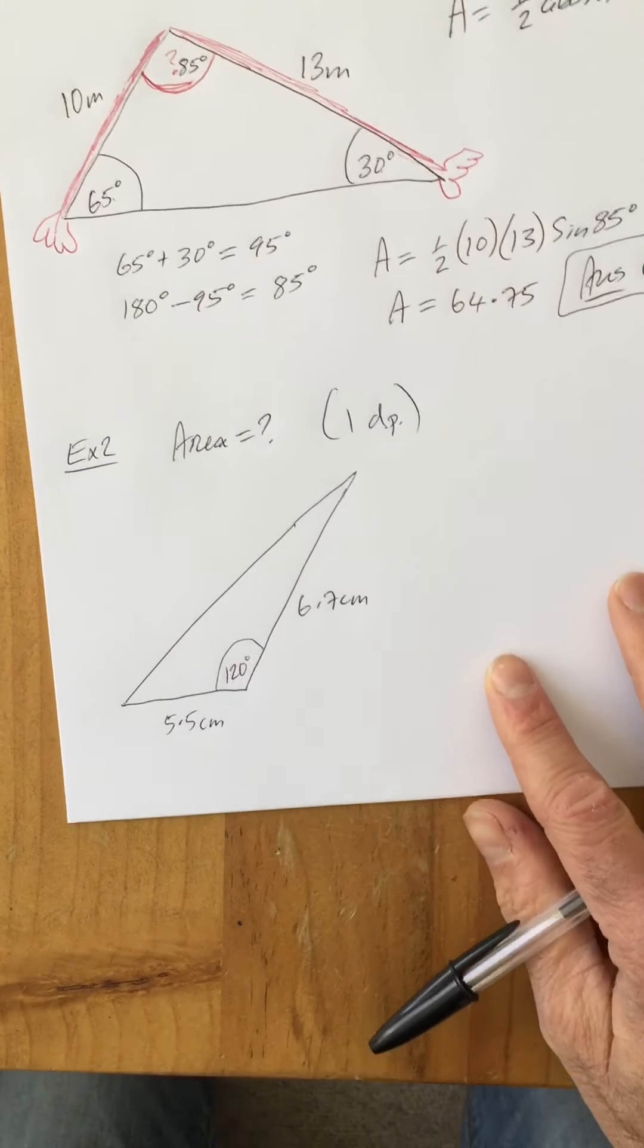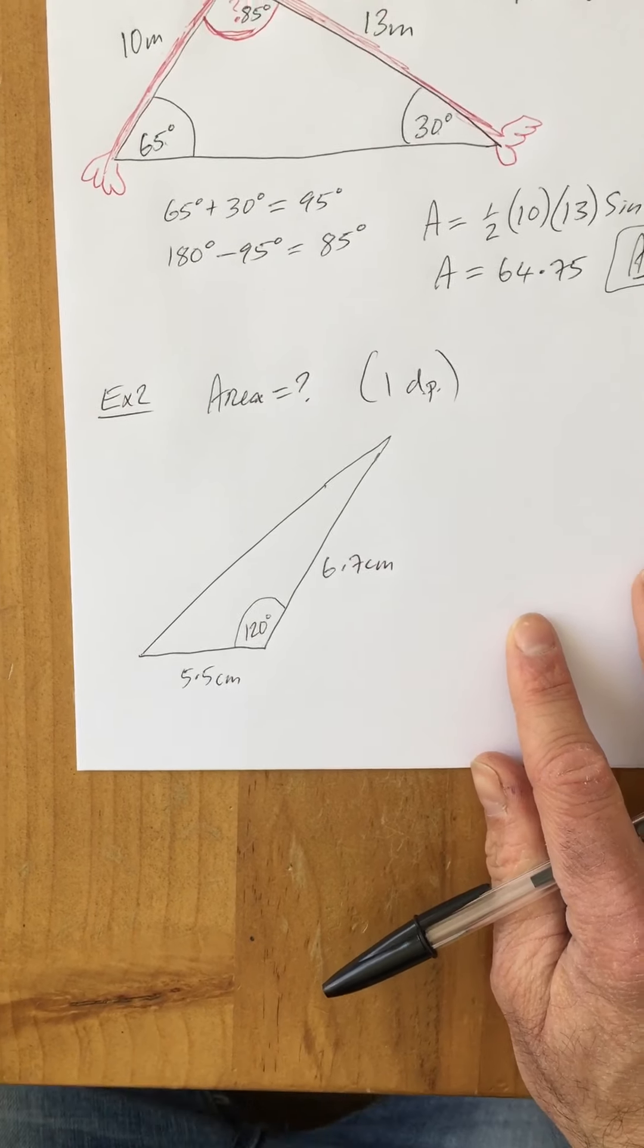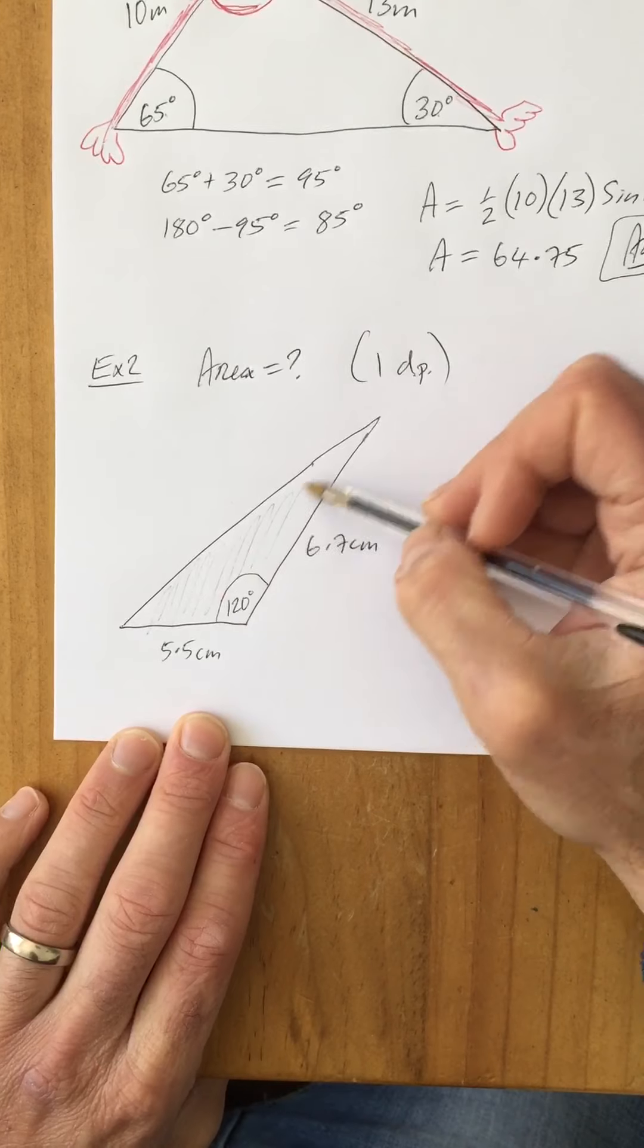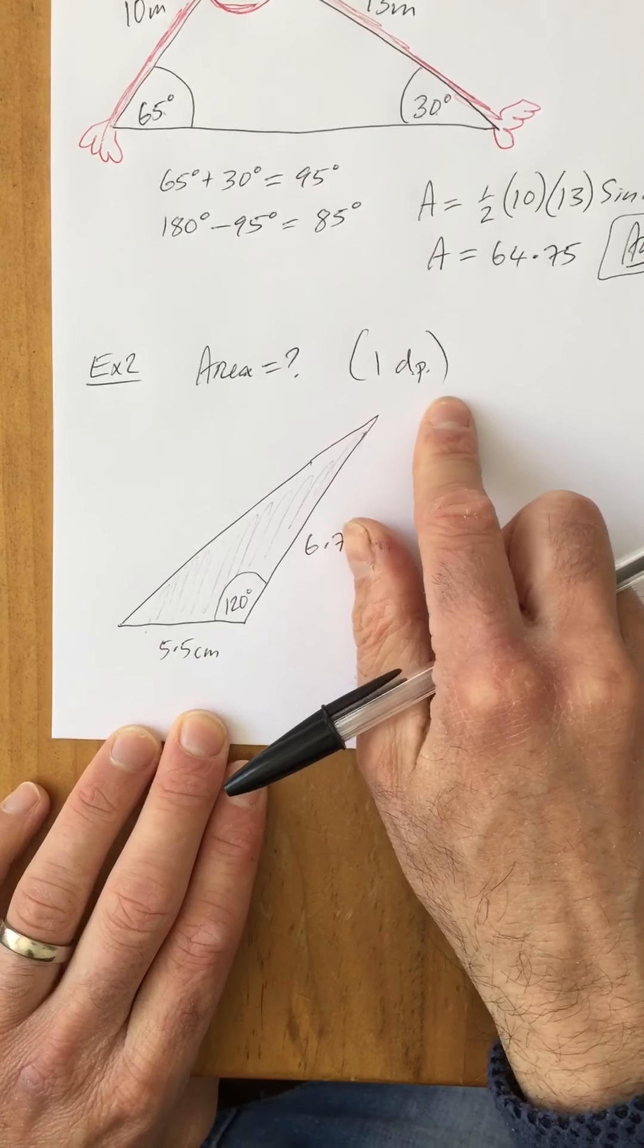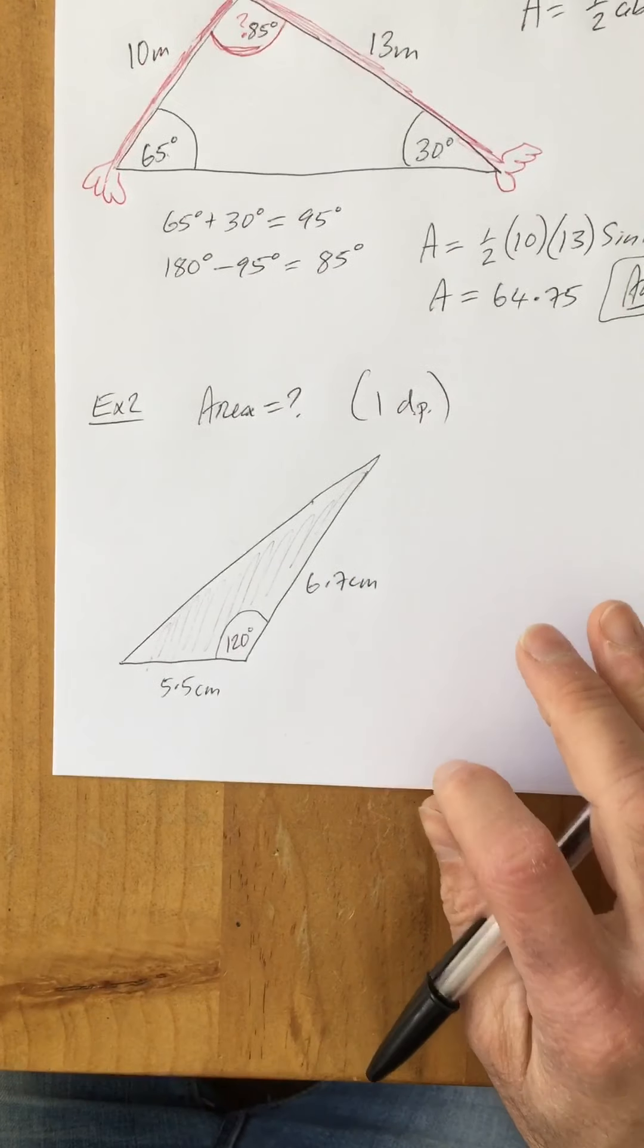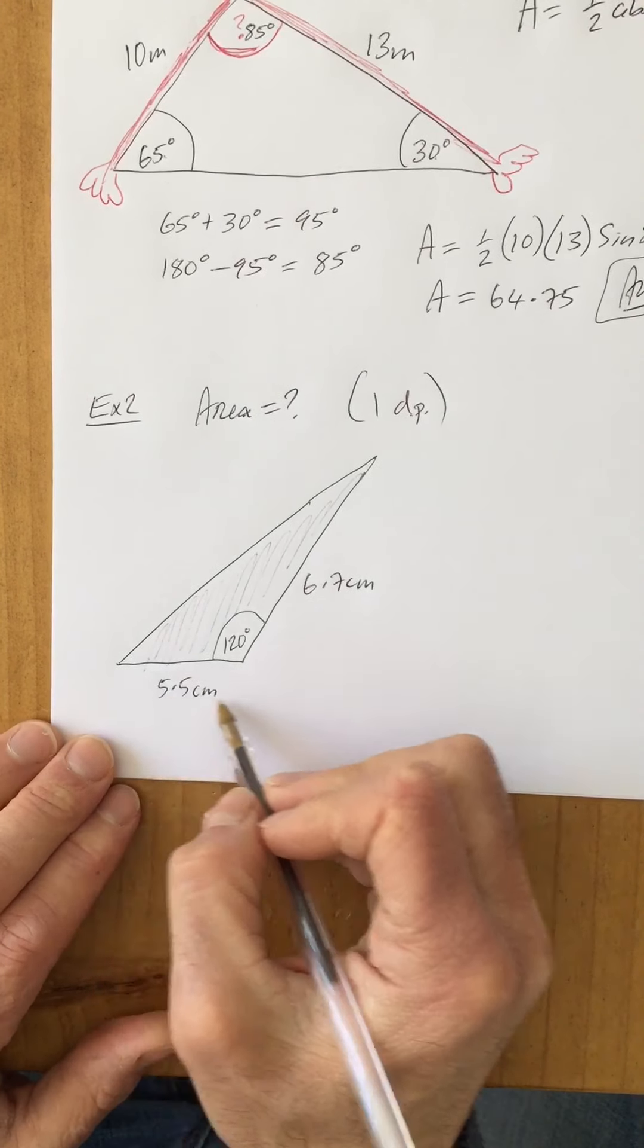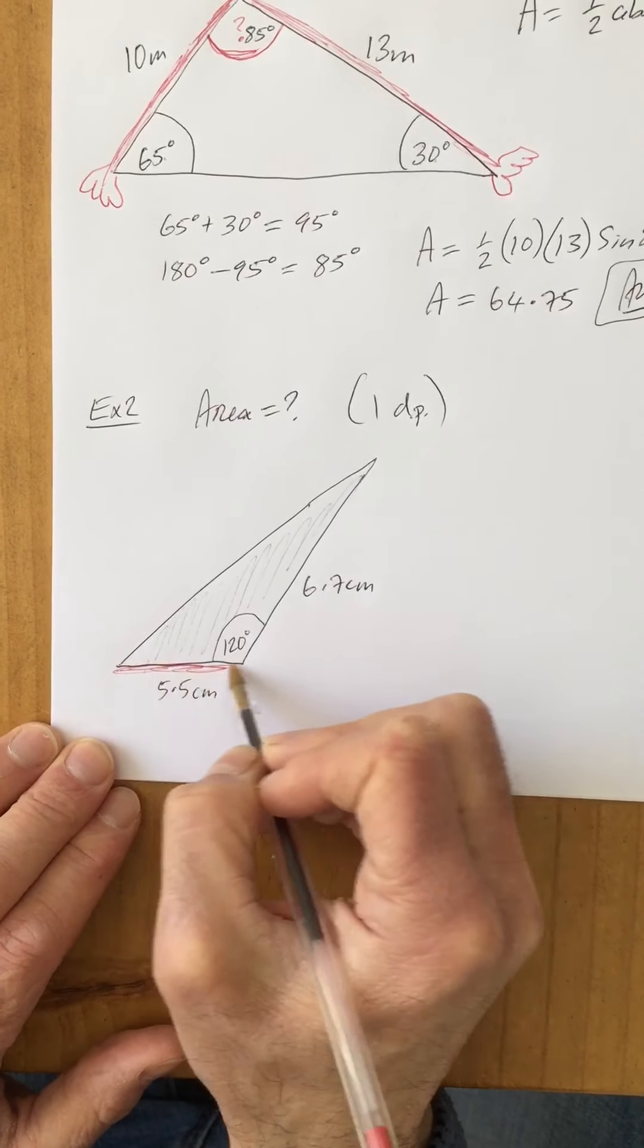A second example, Example two. They want us to find the area of this triangle correct to one decimal place. You'll notice here that we have a length 5.5, we also have a length 6.7...